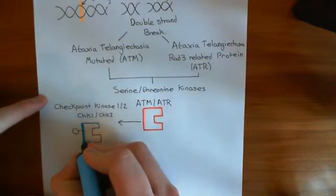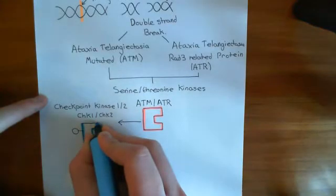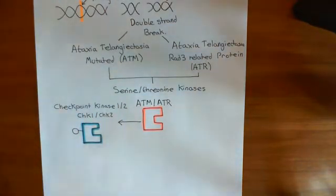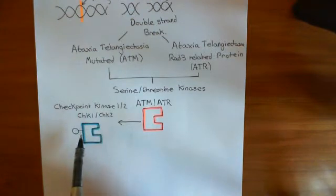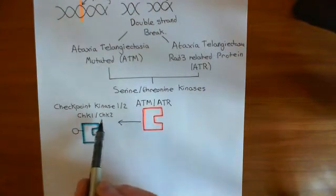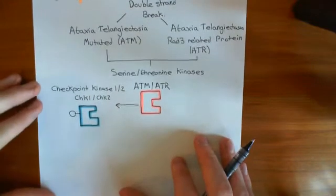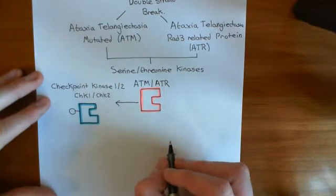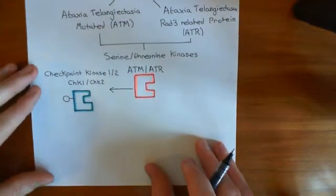To summarise so far: when DNA is damaged, it activates ATM or ATR, which then phosphorylate CHK1 or CHK2. What do CHK1 and CHK2 then do? They phosphorylate the protein P53, which activates it. But we need to understand why phosphorylation activates P53.